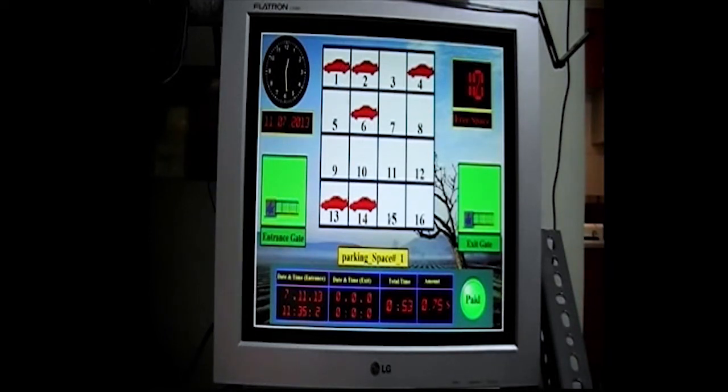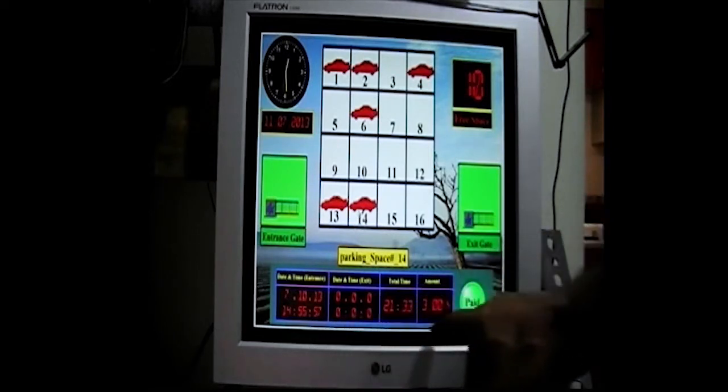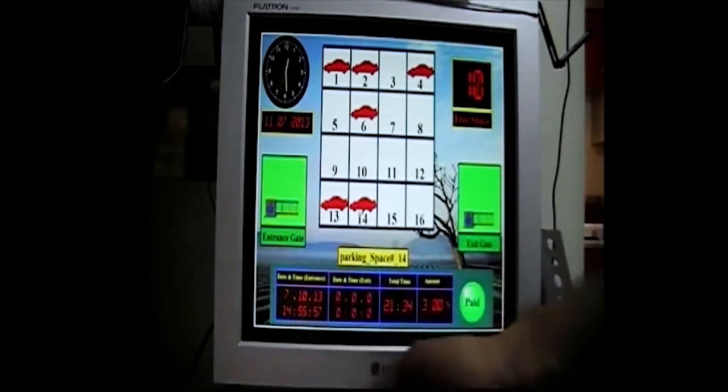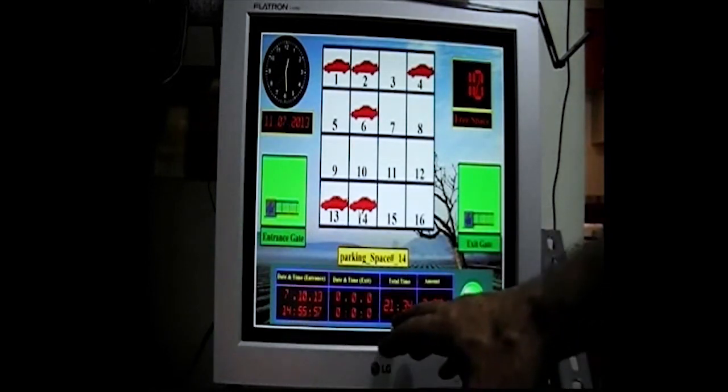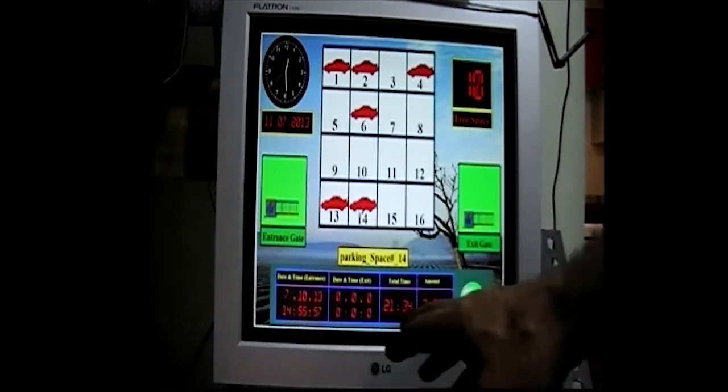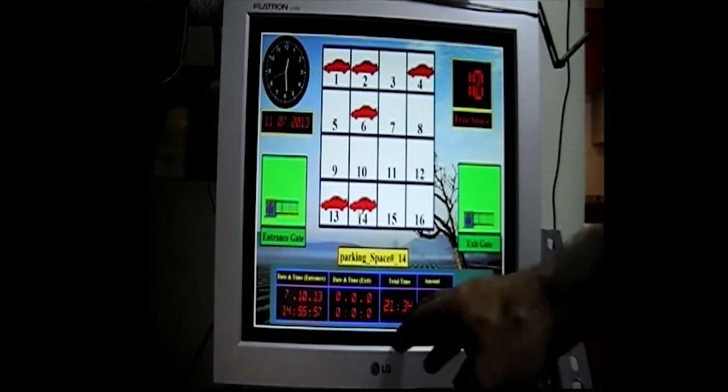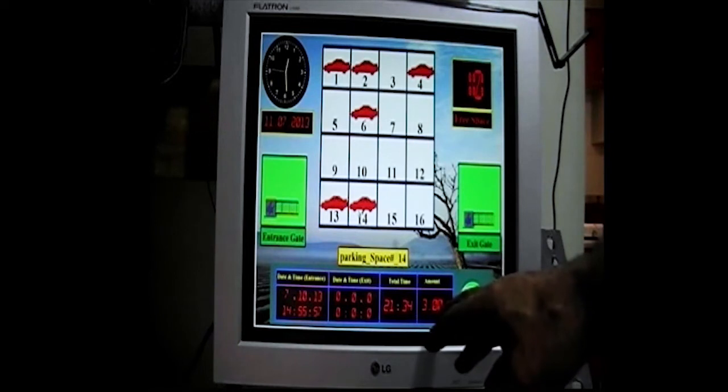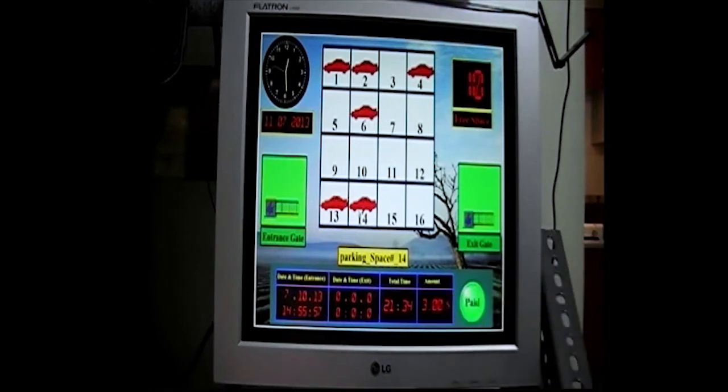For example, if I click on number 14, this is the data related to number 14. It is the time of entrance. It shows that this car is in the parking lot for about 21 hours and 34 seconds. And he owes the parking person about $3.